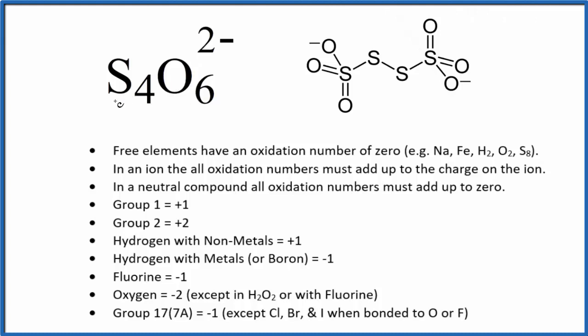First, we're going to find the average oxidation number for the sulfurs in this ion. Then we're going to look at each individual sulfur and figure out the oxidation numbers on each one of these.